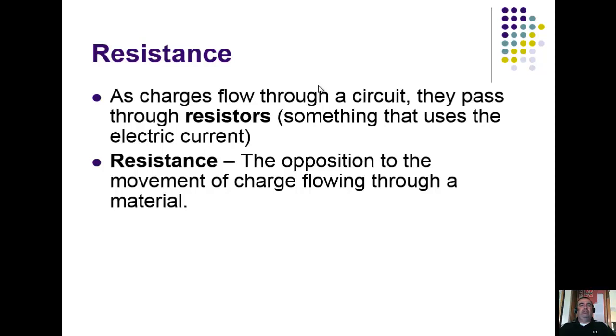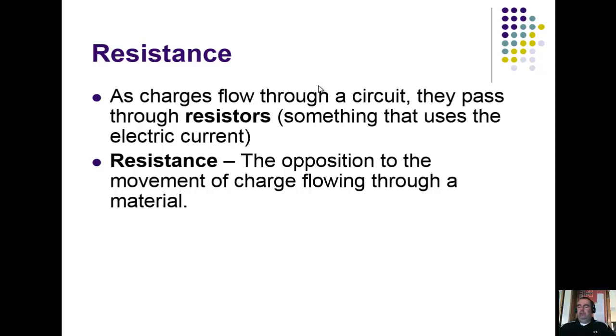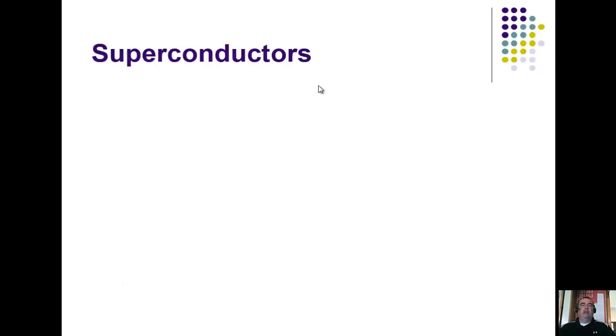What is resistance or a resistor? Think of what resist means—resist means to not allow. It's the opposition to the movement of charges flowing through a material. I like to refer to it as the friction of electricity. Resistance is a lot like friction. As those particles move, they're interacting, striking, and hitting one another. Any time two things come into contact with one another, that's resistance. That's why wires slightly heat up—those particles are coming into contact with one another.